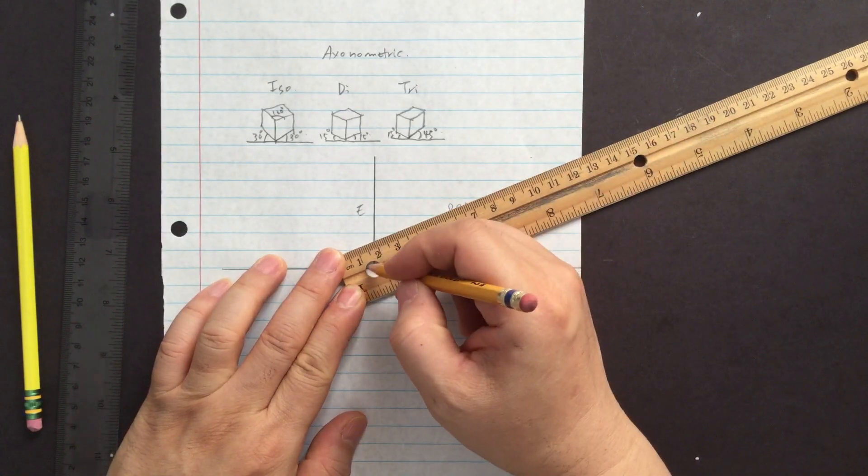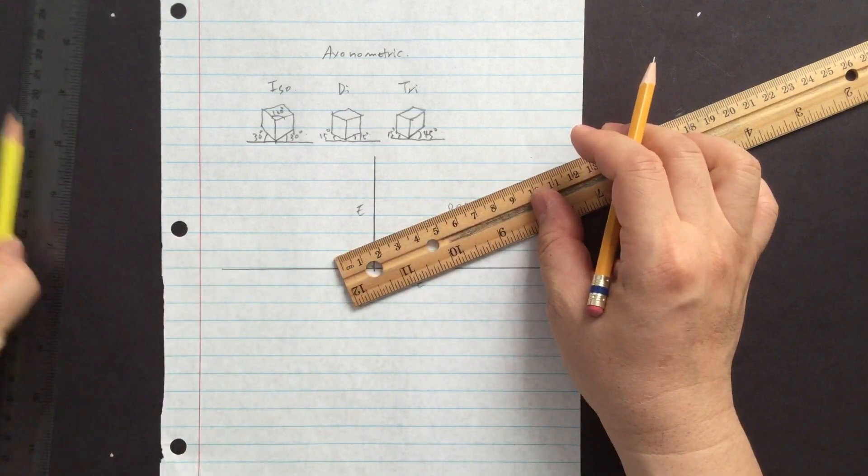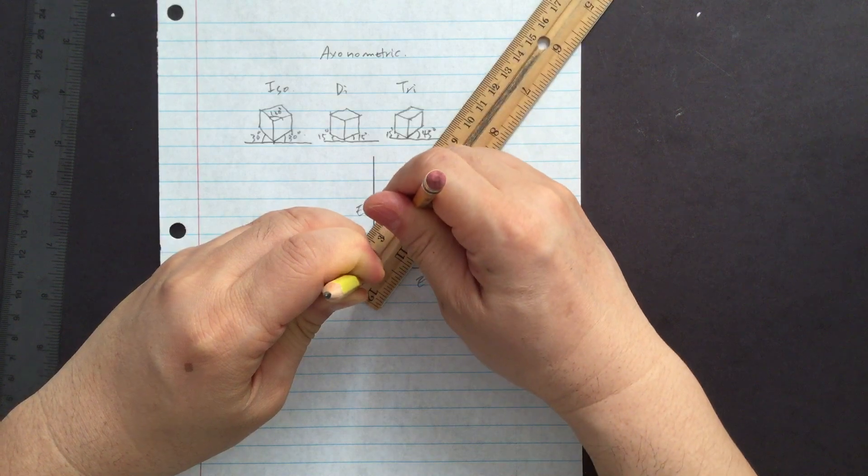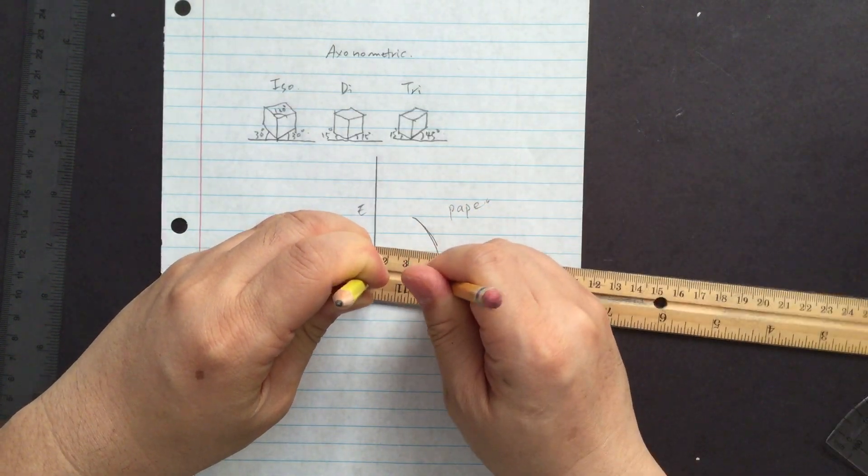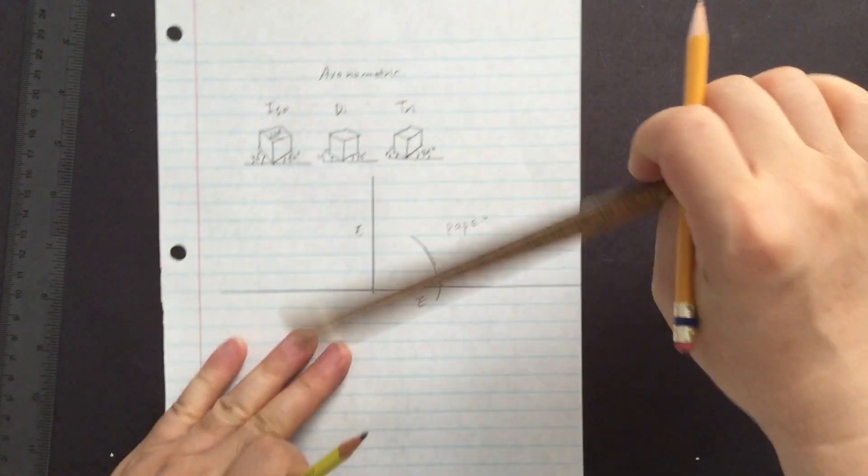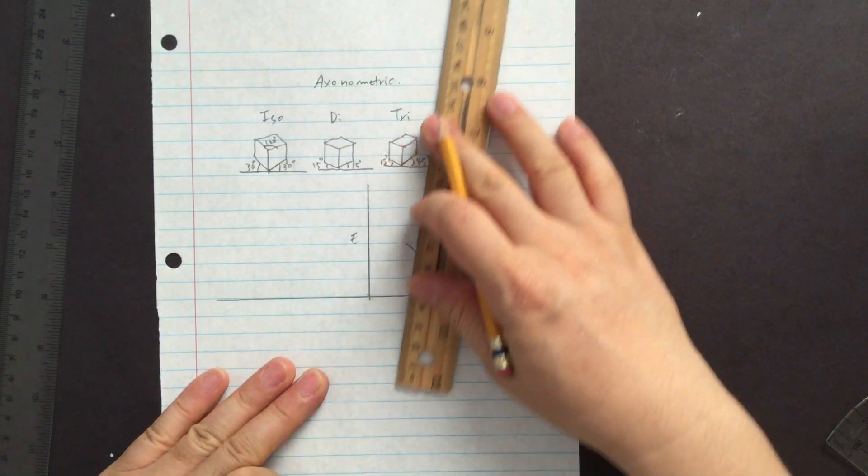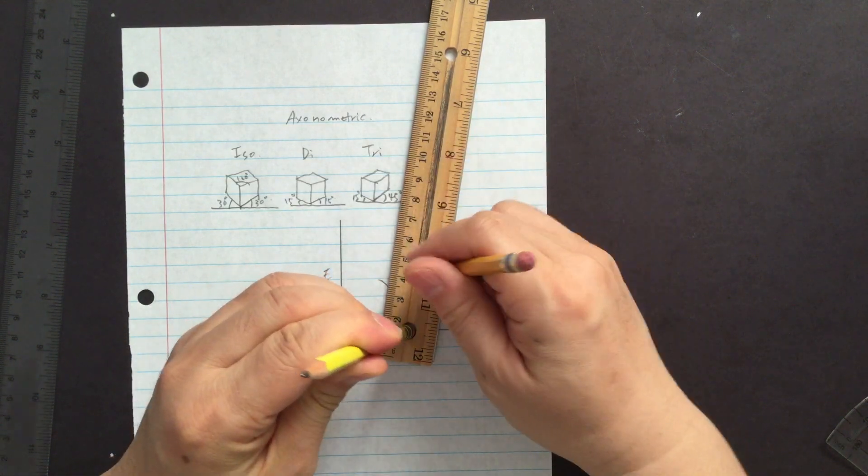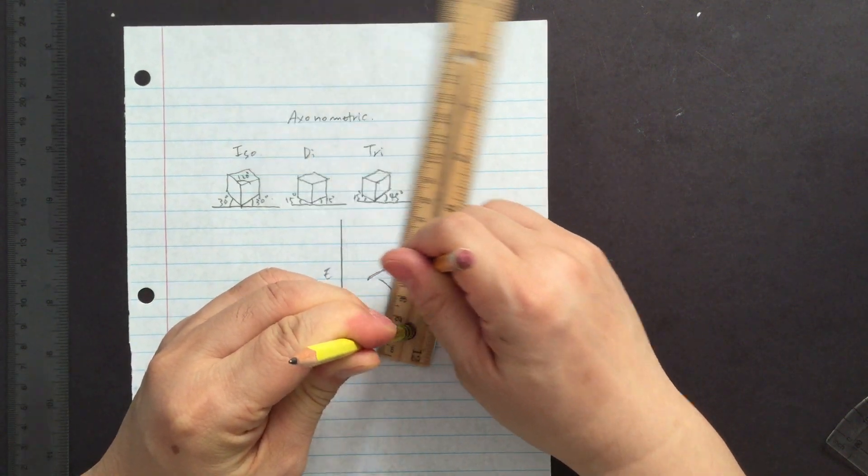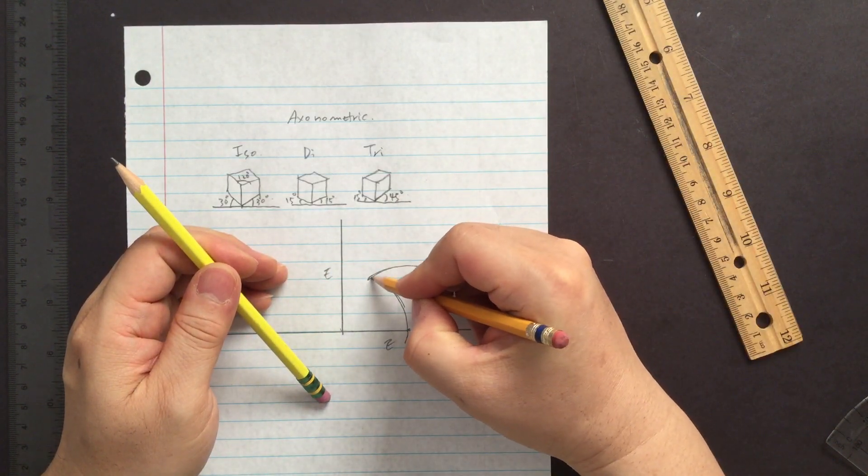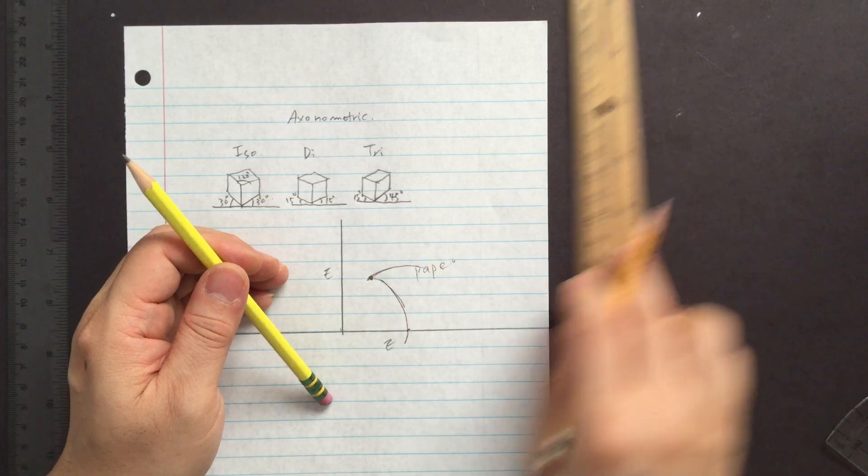So put it on the center exactly. And then what you want to do is find the exact center, put another pencil, and create an angle.